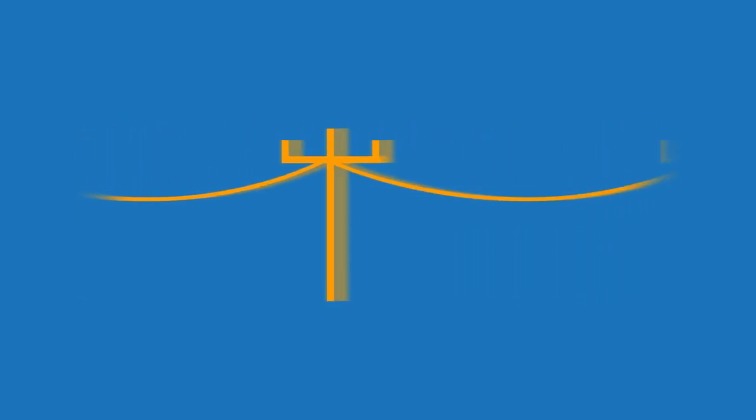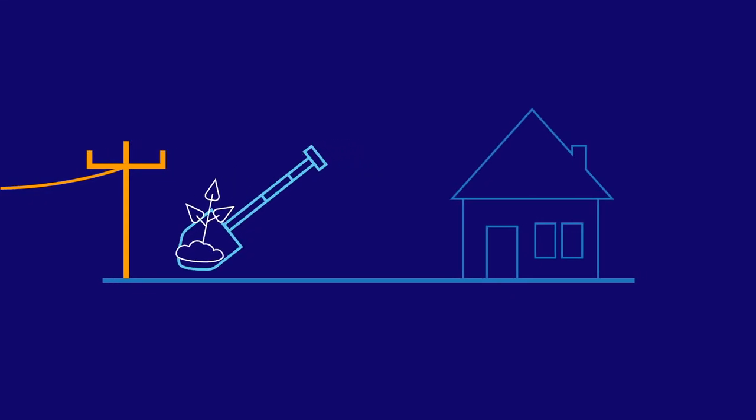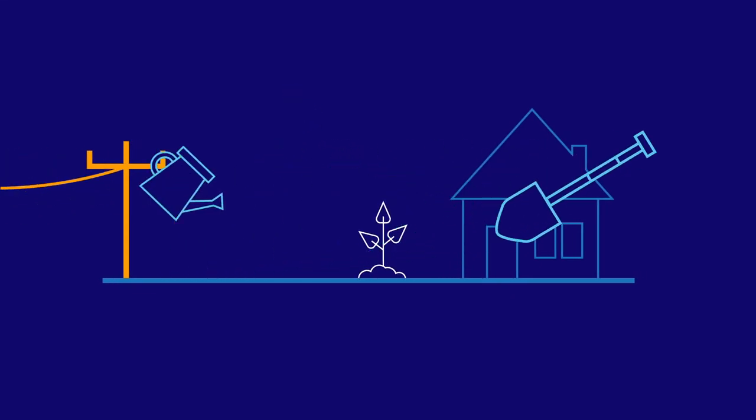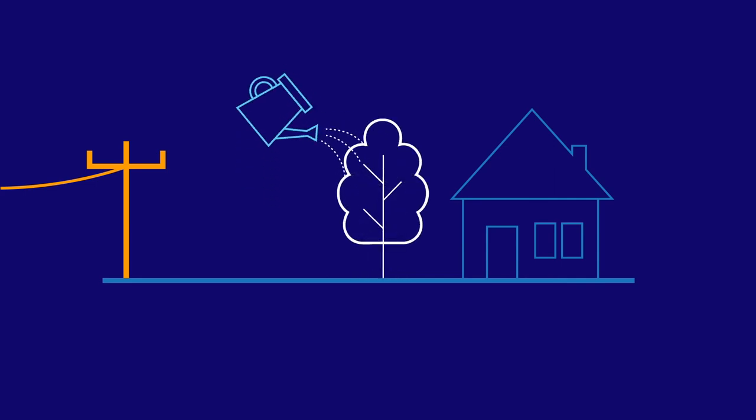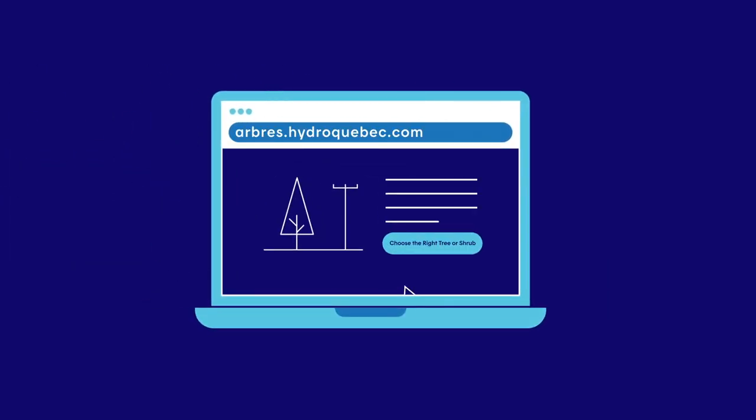We are definitely up to the challenge, but that doesn't mean we couldn't use a little help. When you plant a tree, make sure you choose the right type and plant it in the right spot. Trees grow fast. Be aware of what's around it and avoid planting it near any part of the power system. We even have a tool on our website to give you a hand planning your landscaping. Pretty cool, eh? Bye!